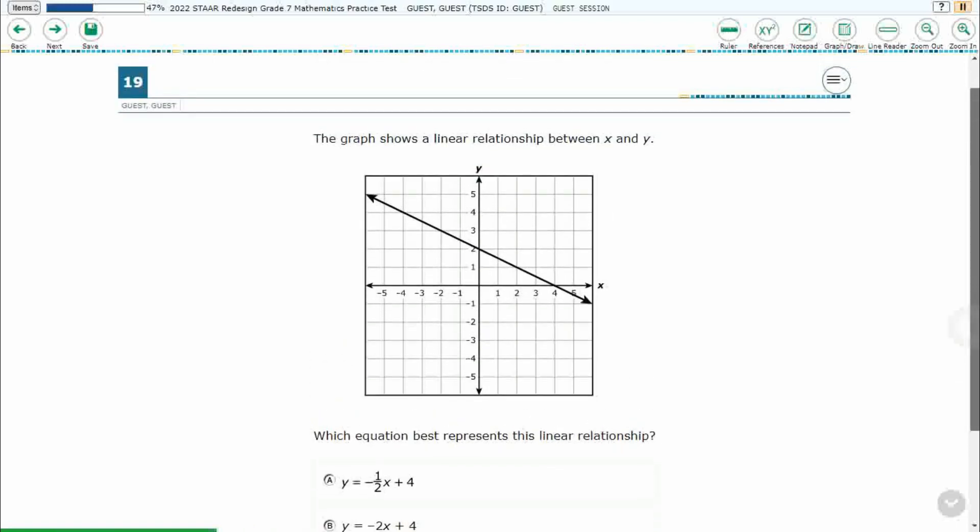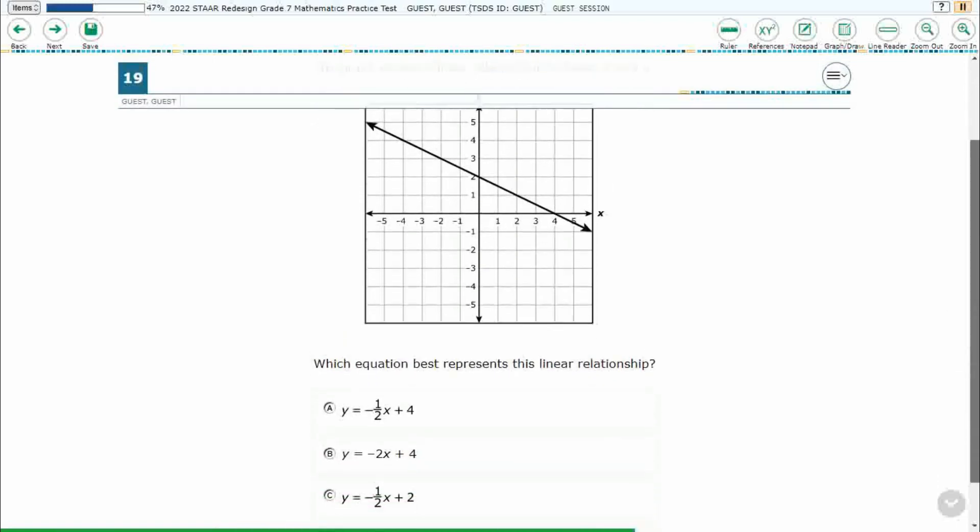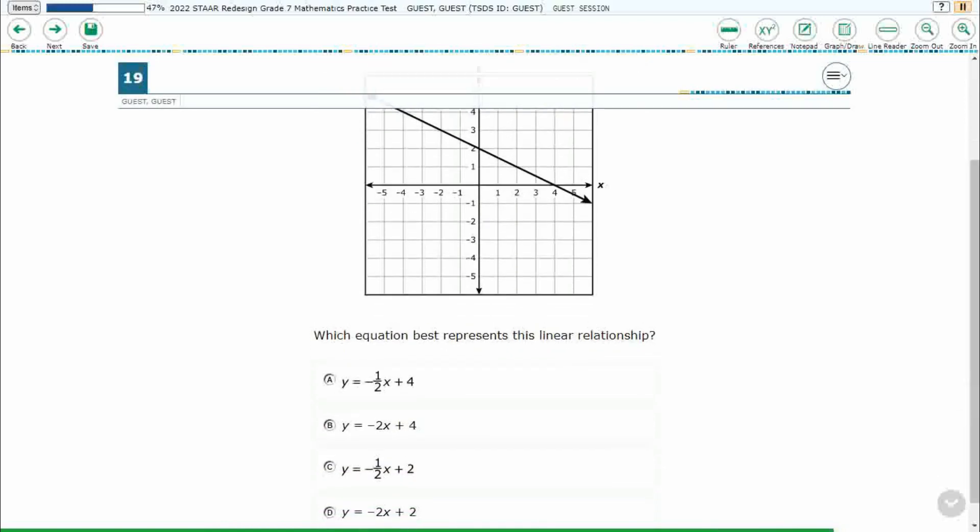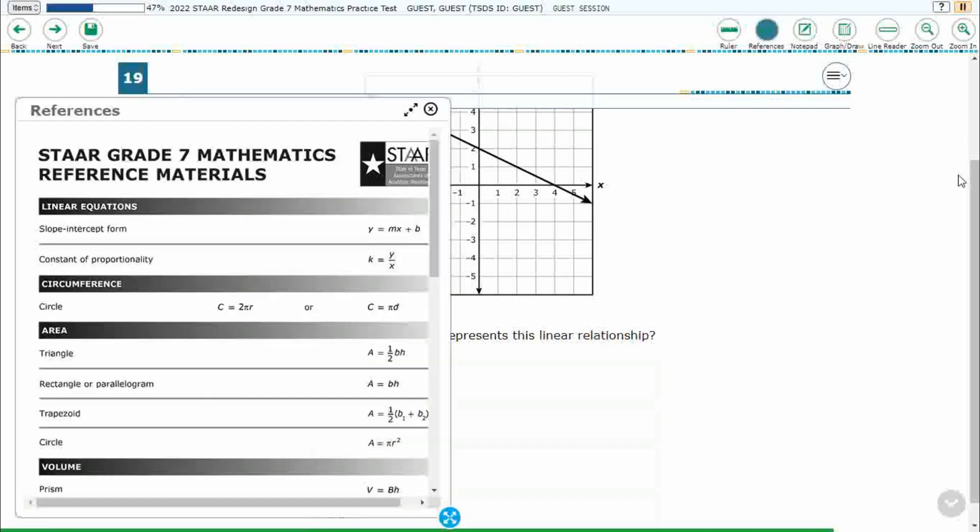So we have a graph here that shows a linear relationship and we need to write an equation that best represents this line, this linear relationship. You see it's y equals, we have a coefficient, we have an x, and then a plus, either 4 or plus 2. So that is how we know it's slope intercept form.